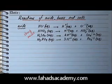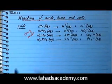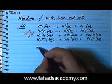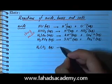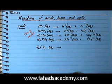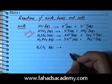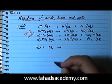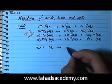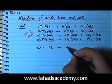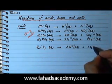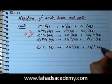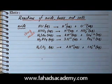Strong acids are completely ionized when dissolved in water. Then you had some weak acids. There was carbonic acid, H2CO3. The term weak acid means that it does not ionize completely — for example, if you have 10 molecules of H2CO3 only one or two are going to ionize. H2CO3 ionizes to produce 2 H+ ions and 1 CO3 2- ion.